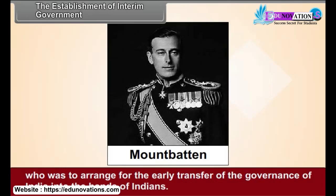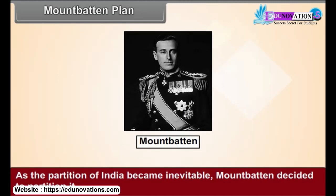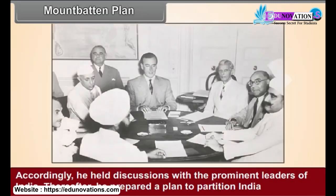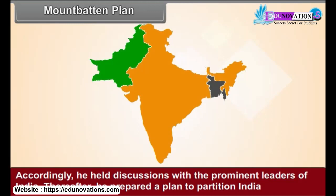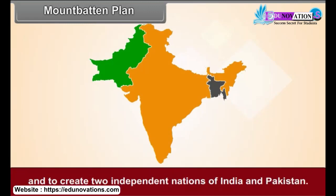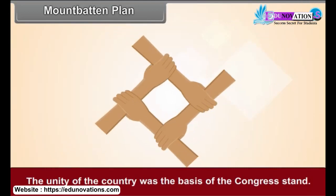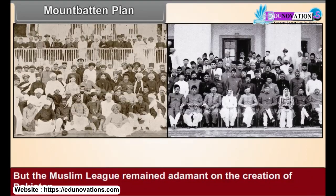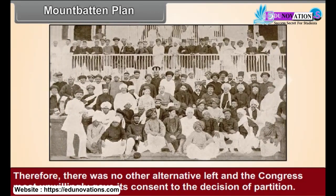Mountbatten Plan: As the partition of India became inevitable, Mountbatten decided to partition it. Accordingly, he held discussions with the prominent leaders of India. Thereafter, he prepared a plan to partition India and to create two independent nations of India and Pakistan. The Indian National Congress was opposed to partition. The unity of the country was the basis of the Congress stand. But the Muslim League remained adamant on the creation of Pakistan. Therefore, there was no other alternative left and the Congress most unwillingly gave its consent to the decision of partition.